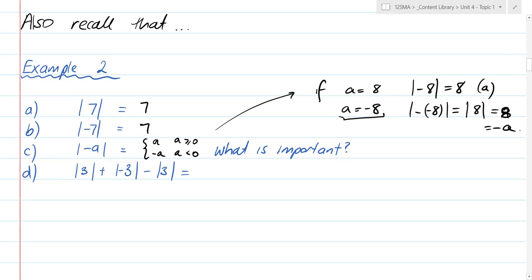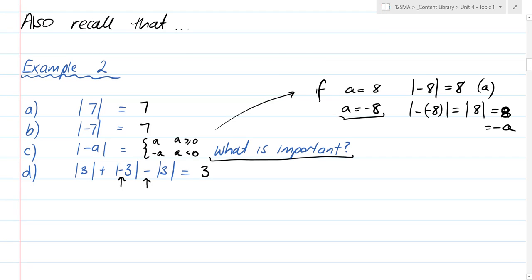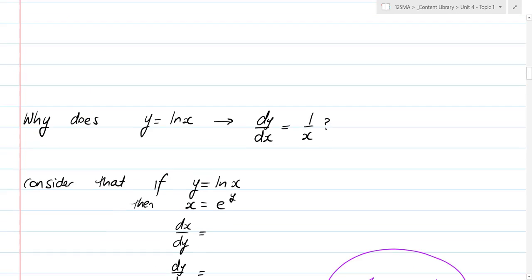So if you get an algebraic response, and this is where we're leading here, you have to be really careful with the algebraic representations in modulus form, because depending on whether we've got a domain, and that domain says only positive numbers, then we've got an issue. So what's important there? That was leading to that question. The last one here, what's the modulus of 3 plus the modulus of negative 3 minus the modulus of 3? The answer is 3. So you get 3 + 3 - 3 is 3. So we know how to use this.